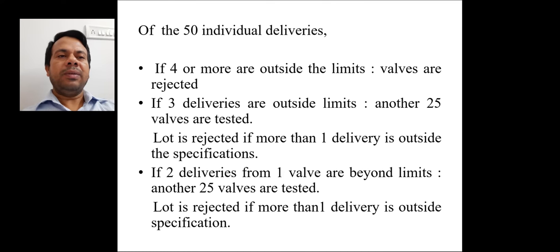If 3 deliveries are outside the limits then another 25 valves are tested, and the lot is rejected if more than 1 delivery is outside the specification. If 2 deliveries from 1 valve are beyond limits then another 25 valves are tested, and the lot is rejected if more than 1 delivery is outside the specification.